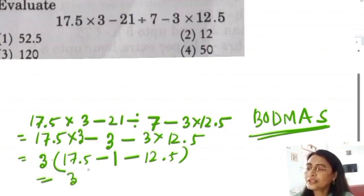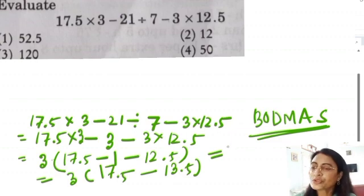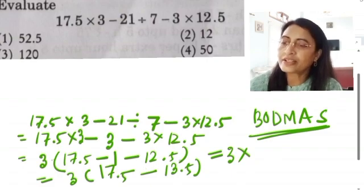Now I am simplifying. 3 into, we will add what is minus. So we will add together. Minus 1 minus 12.5, that is minus 13.5. So this is equal to 3 into what will remain? 17 minus 13.